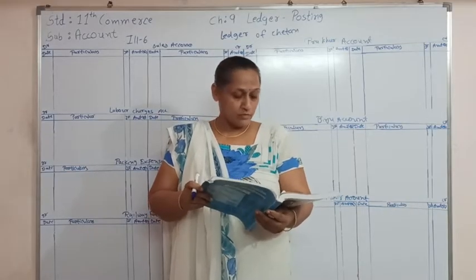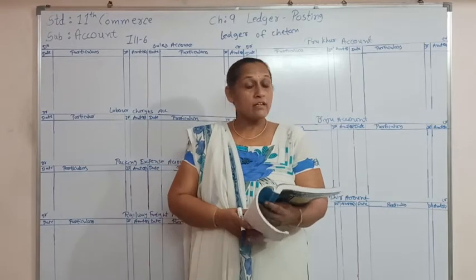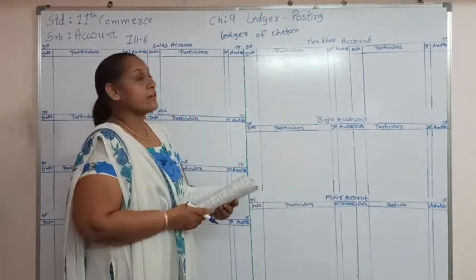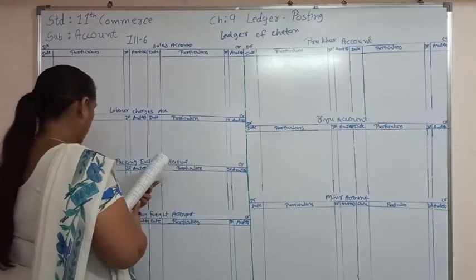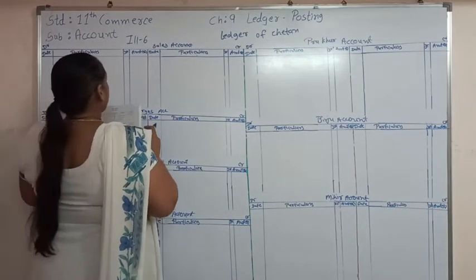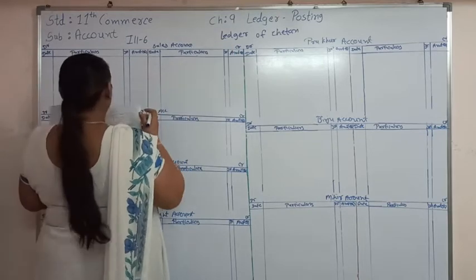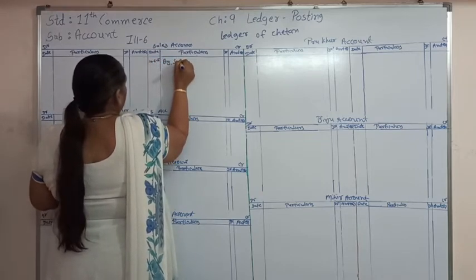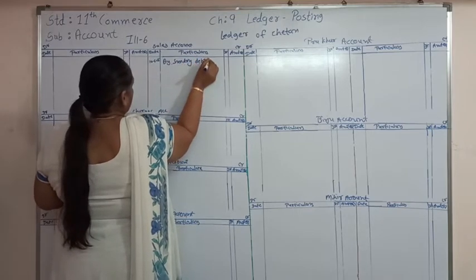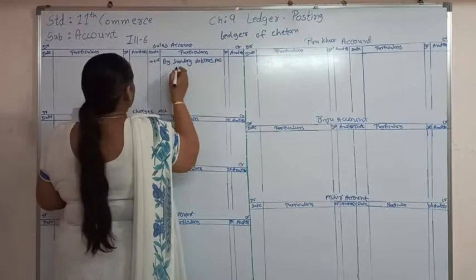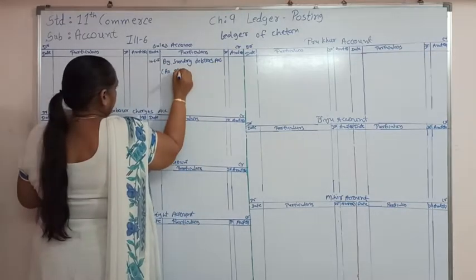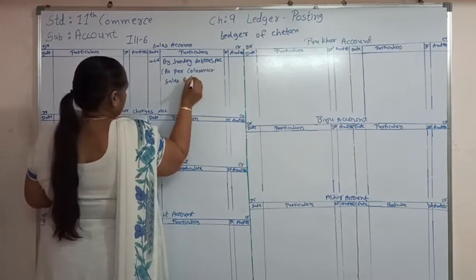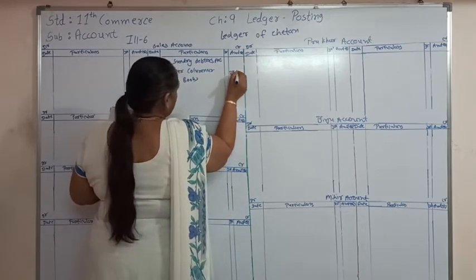Let's start posting from the columnar sales book. It is a sales book, so the total of the goods we are going to write on the credit side of the sales account. The total of the goods account is 27,640, so that we will write on the credit side. Date will be 10/6/15, by sundry debtors account, as per columnar sales book. Total will be 27,640.